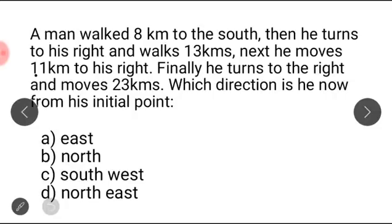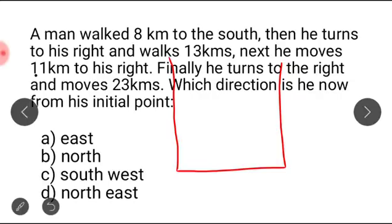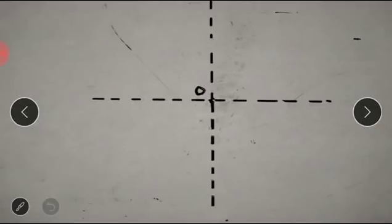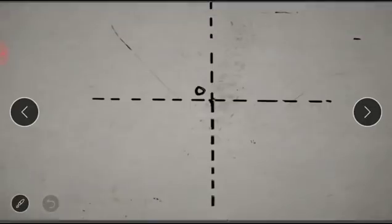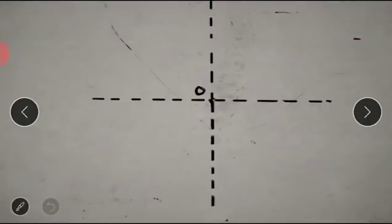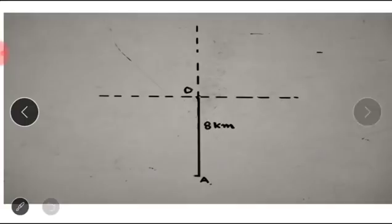We will start with question number one. A man walked eight kilometers to the south, then turns to his right and walks 13 kilometers. Next he moves 11 kilometers to his right. We will draw this — the initial point is O, and we will draw two axes. He moves towards south eight kilometers.